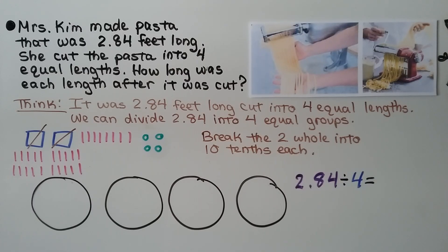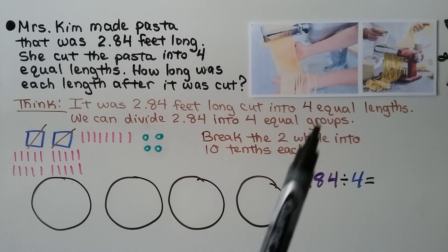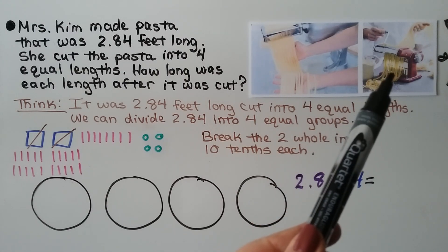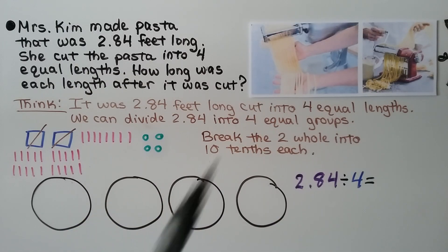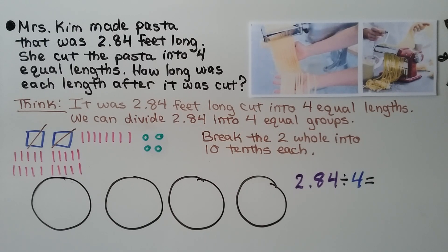Have you ever seen anyone make homemade pasta? They roll out the pasta dough, put it through a machine, and it cuts it into long strands. Mrs. Kim made pasta that was two and eighty-four hundredths feet long, and she cut the pasta into four equal lengths. How long was each length after it was cut? We divide two and eighty-four hundredths into four equal groups.